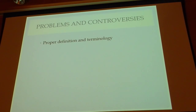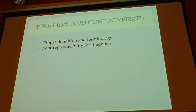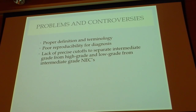There are several problems and controversies: the proper definition and terminology for these tumors, reproducibility of diagnosis, and a lack of precise cut-offs to separate intermediate-grade from high-grade and low-grade from intermediate-grade neuroendocrine carcinomas, even by current WHO standards.